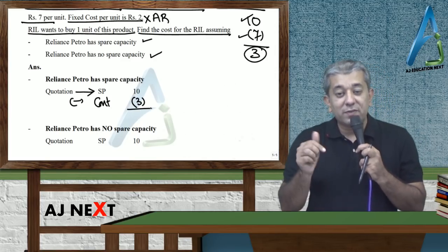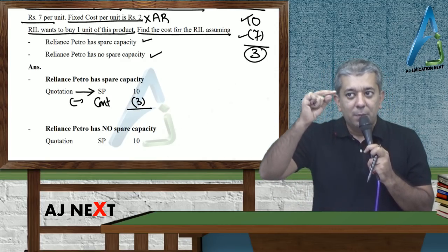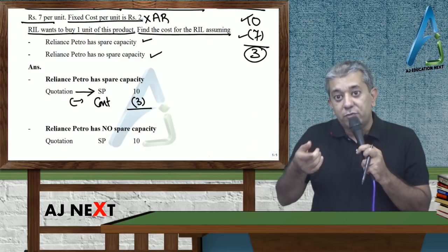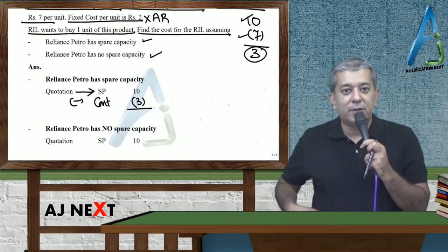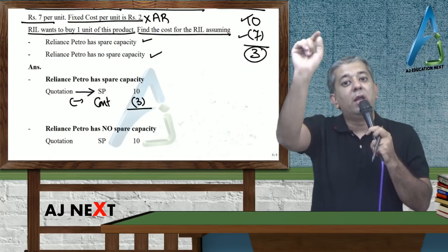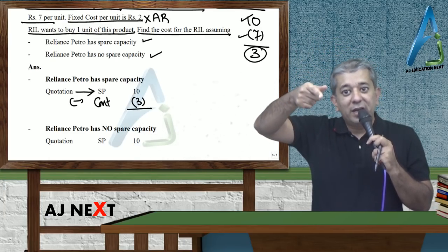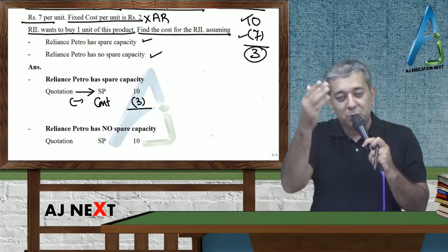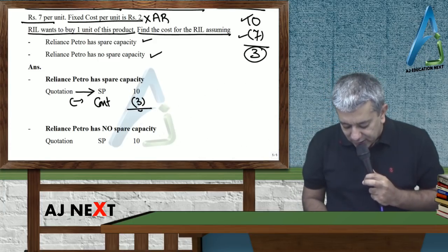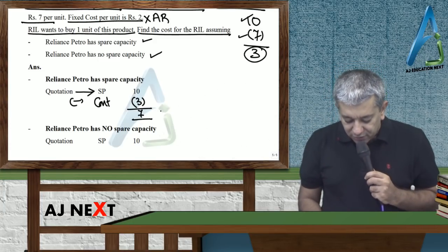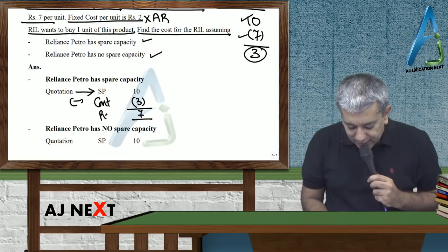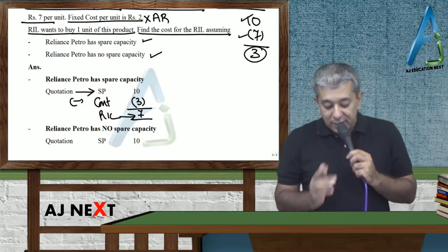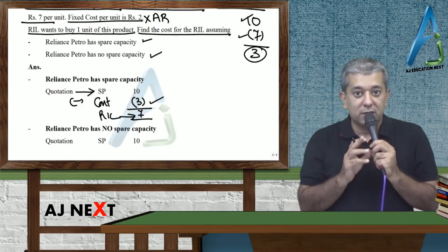Ab zara souch. Ye wala chiz, hum log less kiyo karte hai? Simple baat hai, beta. Pehle RIL ne 10 rupee deya kis ko? Reliance Petro ko. Reliance Petro ne woh 10 rupee ka na se, 3 rupee ka ma liya. Yeh 3 rupee ha, ultimately holding company ko hi wapis jayega. Toh zara souchou. Pehle holding company ne 10 rupee ka kharcha kiya. Lekin 3 rupee us ko wapis a gya from the subsidiary company, kyunki it is part of it. Toh us ke liye cost gir ke, kitne rupees ka ho gaya? Seven.